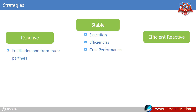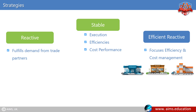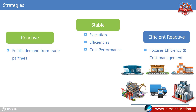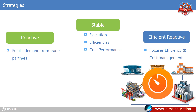The efficient reactive supply chain strategy focuses on efficiency and cost management on the total delivered cost of finished goods. For example, in supermarket chains, distribution centers, logistics providers, and manufacturers cooperate to replace the goods sold in the shops within less than 24 hours.